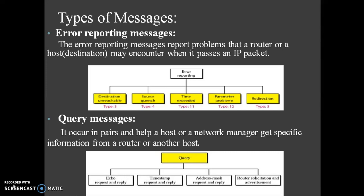The next block is time exceeded. The time exceeded message is generated in two cases. Routers use routing tables to find the next hop — that is, the next router that must receive the packet. If there are errors in one or more routing tables, a packet can travel in a loop or cycle, visiting a series of routers. The next block is parameter problem: any ambiguity in the header part of a datagram can create serious problems as it travels through the internet. The next block is redirection: when a router needs to send a packet to another network, it must know the IP address of the next appropriate router.